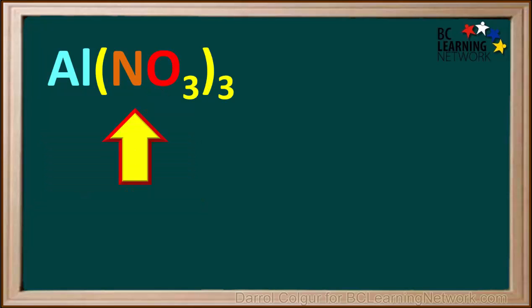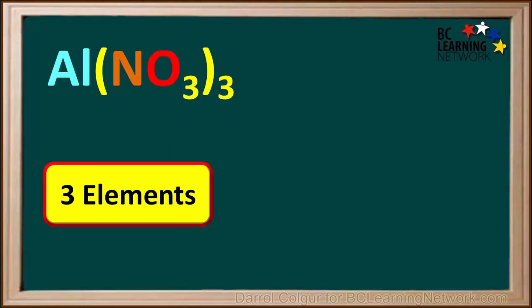Now we'll consider the formula Al(NO3)3. This formula also contains three elements — aluminum, nitrogen, and oxygen — so it must have a polyatomic ion in it.